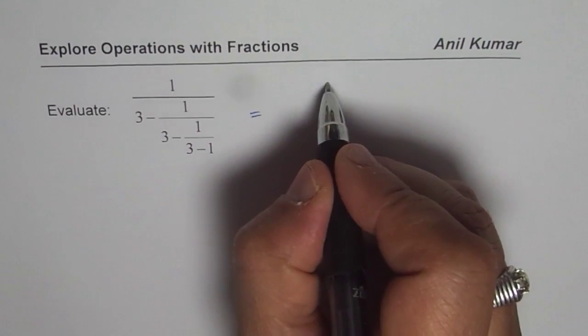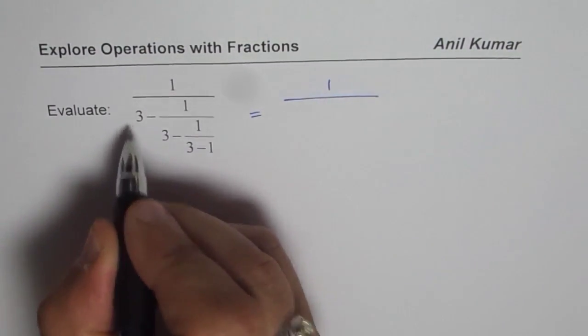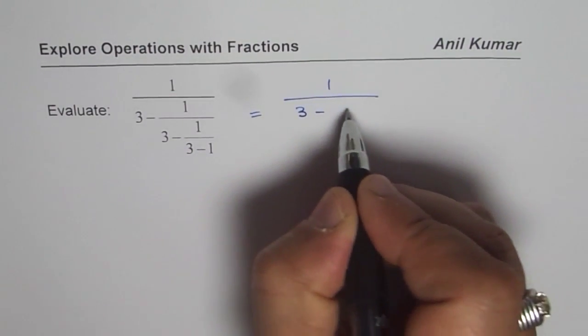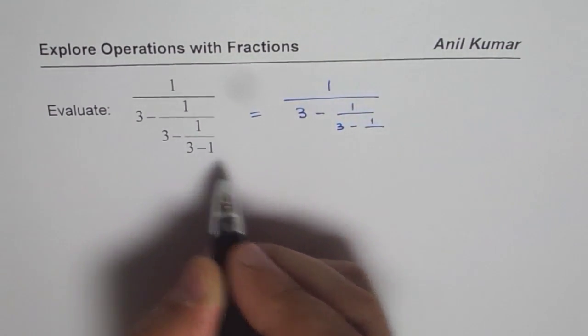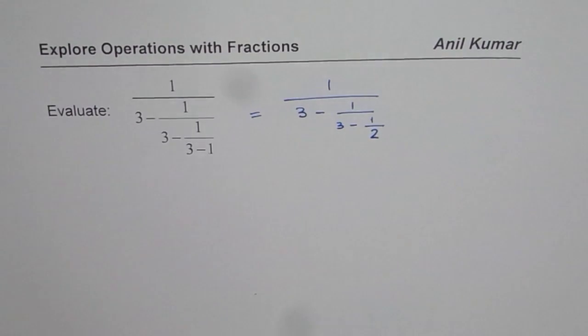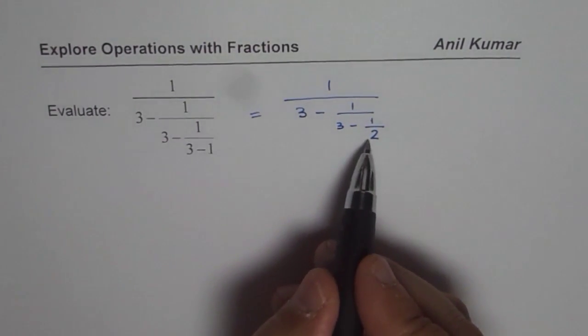So we have this as equals to 1 over 3 minus 1 over 3 minus 1 over 3 minus 1 is 2. That looks simple. So that is the first step.